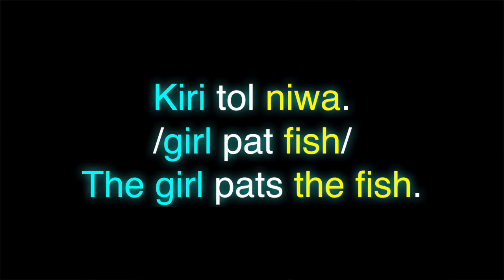Let's start with the easiest type of indirect object marking — the one that everybody knows probably who's watching this video — the way that indirect objects are marked in English. To start off, we need a control sentence. For example, 'Kiri tol niwa' — girl pats the fish. That's a transitive clause where we have the subject on the left, the object on the right, the verb in the middle. No marking for any of them because this is like English.